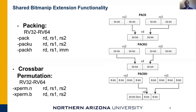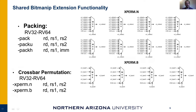We have packing instructions where we take the lower 16 bits of RS2 and RS1 registers and pack them onto the RD register. Then we have crossbar permutation instructions which allow us to reposition the nibbles and bytes in the RS1 register.